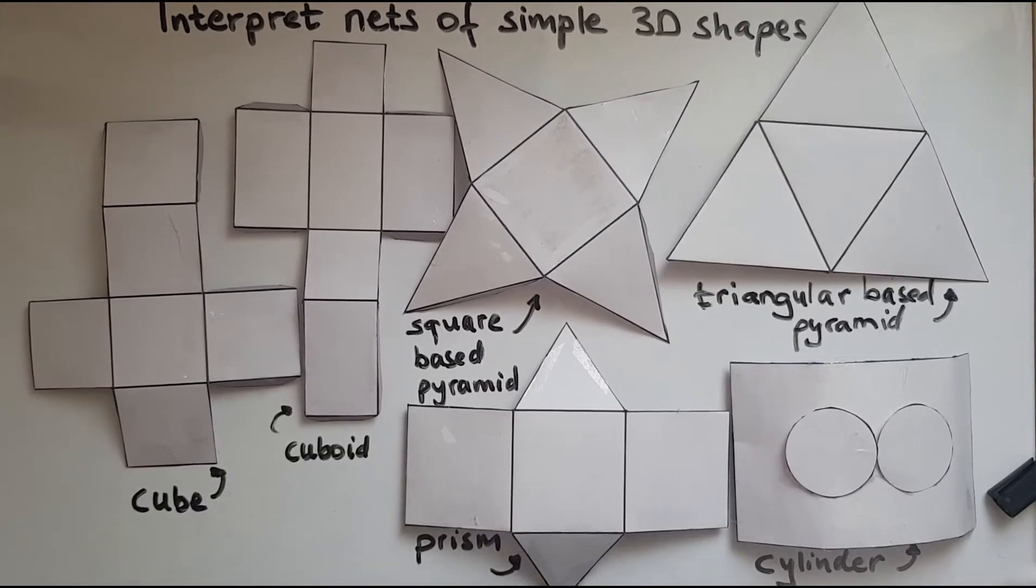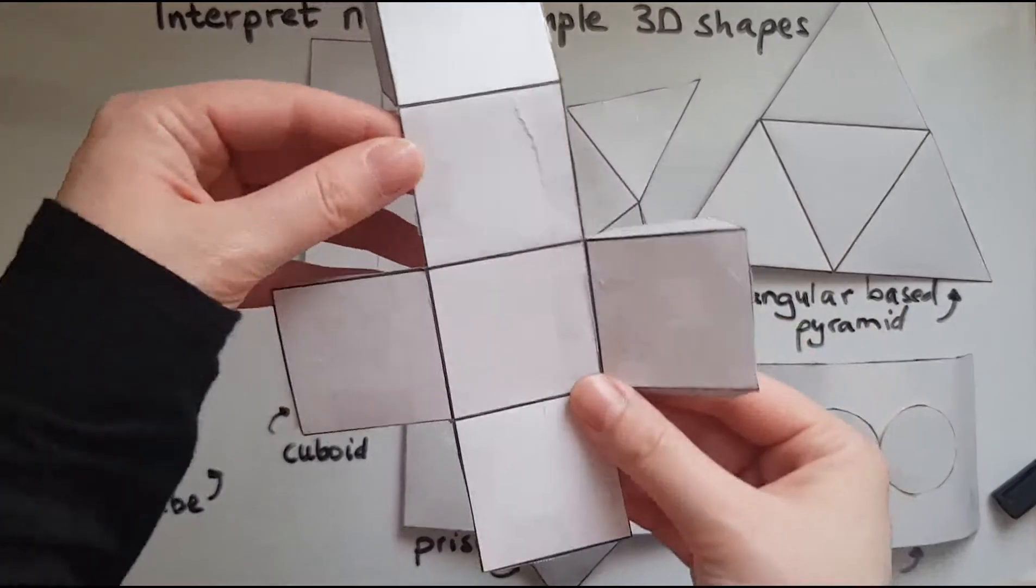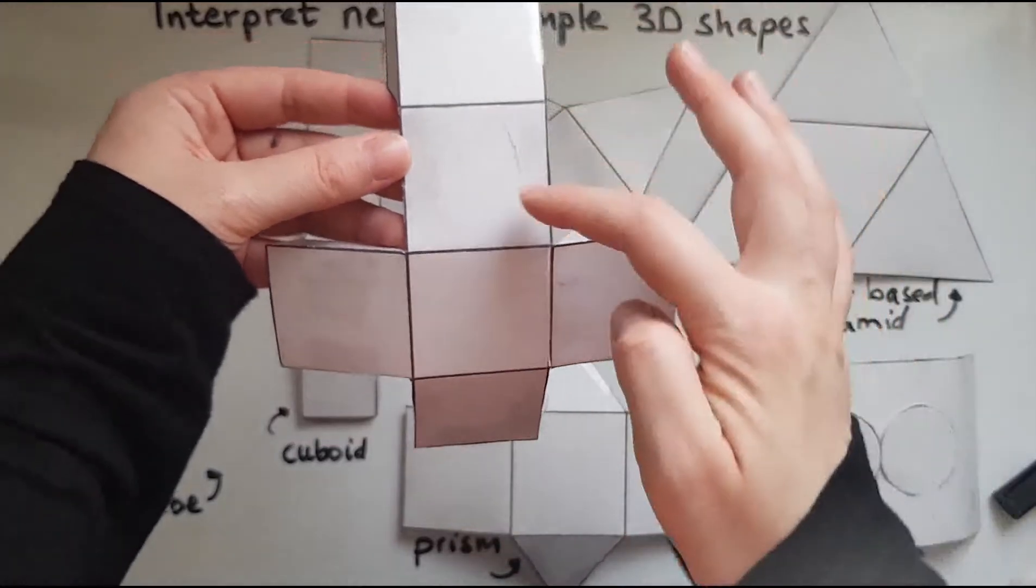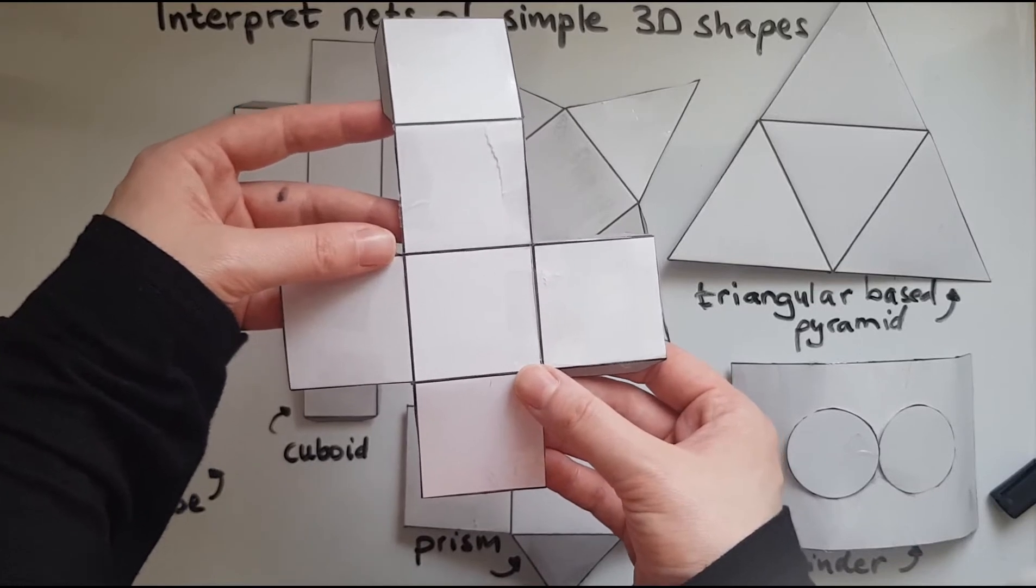I've added the names of the shapes now as well. So let's start with the first one. This is the net of a cube and we can see it has square faces. There are six of them and we know that a cube has six square faces.